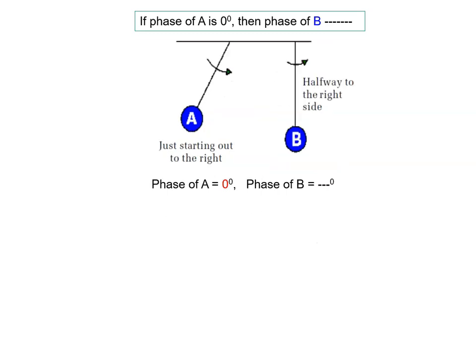Ab main aapse poochun. Agar A ka phase 0 degree hai, B ka phase getta hoa hai. Dekho, B ko bhi ap dekho agar extreme se release kar rahe ho, tab iska phase getta hoa raha tha 0 degree. Ab middle me aya hoa phase getta hoa 90 degree.